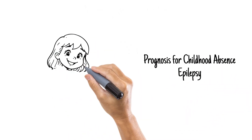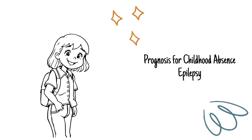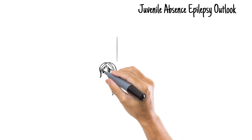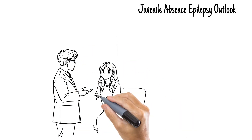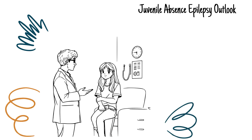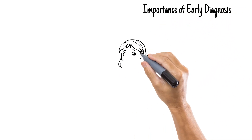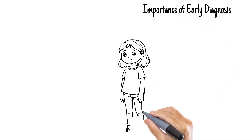Will your child ever outgrow them? In many cases, yes — especially if the child has Childhood Absence Epilepsy. About 60–70% of children with CAE will outgrow their seizures by adolescence. Juvenile Absence Epilepsy, on the other hand, is more likely to persist or evolve into other seizure types over time. Still, even when seizures do go away, close follow-up with a pediatric neurologist is important. Early diagnosis and treatment can improve long-term outcomes and academic progress.